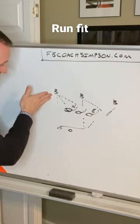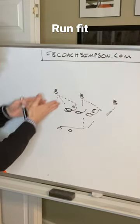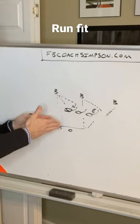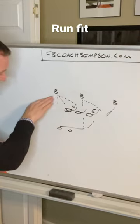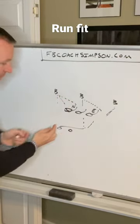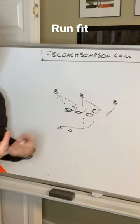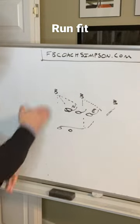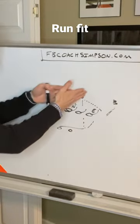The backside linebacker is responsible for the playside A gap, but he's going to fit all the way here. So if the ball were to cut back, he's responsible for that inside run fit coming this direction.